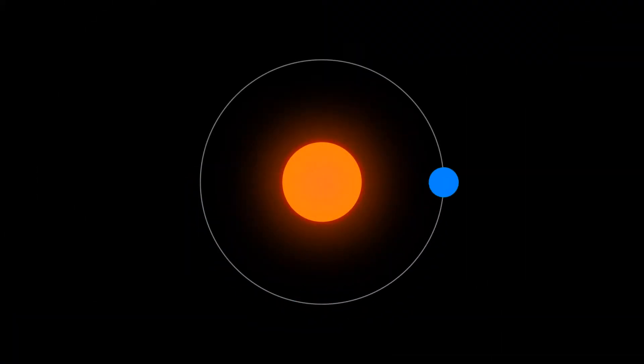If a planet orbits a star in isolation, it's like a perfect stopwatch, with every orbit ticking off an exact period of time.